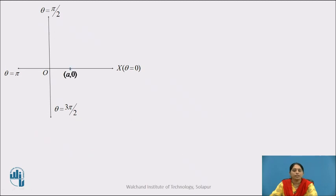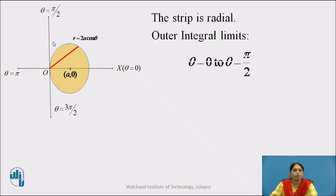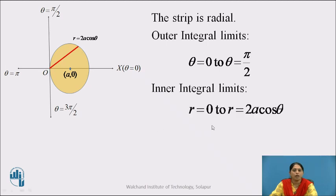Let us draw the region. Point (A, 0) is marked and the circle is drawn. The equation of the circle is R equals to 2A cos theta and the region of integration is the upper half of this circle. Since the given example is in polar form, the strip is radial. To find the outer integral limits, we move this strip within the region of integration — it moves from theta equals 0 to theta equals pi by 2. To find the inner integral limits, we look at the ends of the strip: its lower end is on the pole and its upper end is on the circle R equals 2A cos theta. Therefore, the inner integral limits are R equals 0 to R equals 2A cos theta.